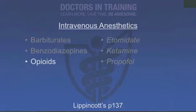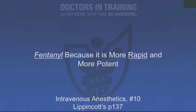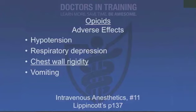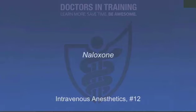Let's talk about opioids. Morphine is the hallmark; fentanyl is used often because it's more rapid and more potent. Opioids are very good at analgesia and give a little amnesia too. Side effects can be severe hypotension, respiratory depression, and chest wall rigidity — basically you can't bag the patient, which is scary — and vomiting. The reversal agent for opioids is naloxone — very short acting, so you may need to repeat the dose. Very pinpoint pupils indicate opioid overdose; give naloxone and those pupils will pop out.